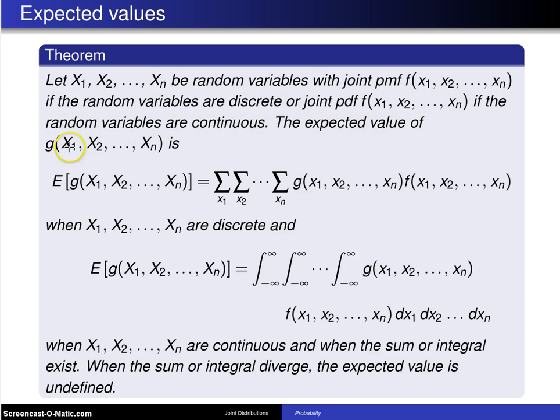The expected value of g of X₁ up to Xₙ is, and it's going to be split into two cases depending on whether you have discrete or continuous random variables. In the discrete case, you will have an n-fold summation over the support of g of x₁ up to xₙ multiplied by the joint probability mass function f of x₁ up to xₙ.